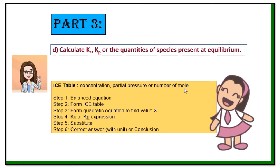There are a few steps in solving problems for Kc, Kp, and all the quantities of species present at equilibrium. Step 1: balance the equation. Step 2: form the ICE table. Step 3: form the quadratic equation to find the value of x. Step 4: write down the Kc or Kp expression, substitute the values, and get the final answer. Sometimes we need to check the final answer has the correct unit — concentration is capital M and partial pressure is in atm — or make a conclusion.